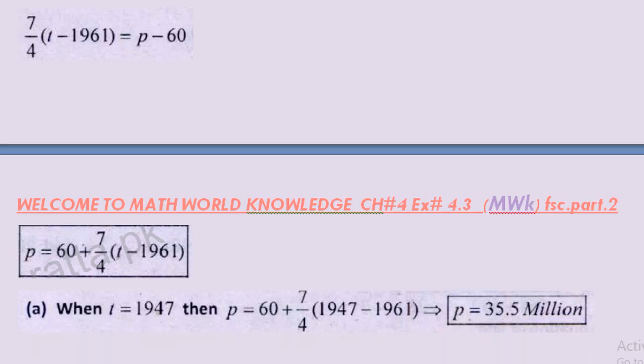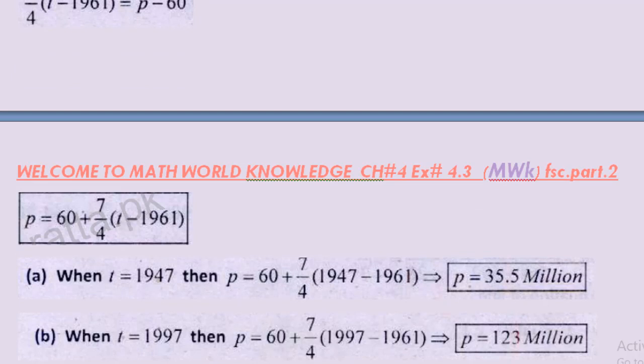Isi tarah agar hum t ki value 1997 darj karte hain toh p ki value hamare paas 123 million aa jayegi. Very simple tha yeh question, umeed hai ki aapko is lecture ki samajh aa chuki hogi. Thanks for watching, shukriya, alafiz, shukriya.